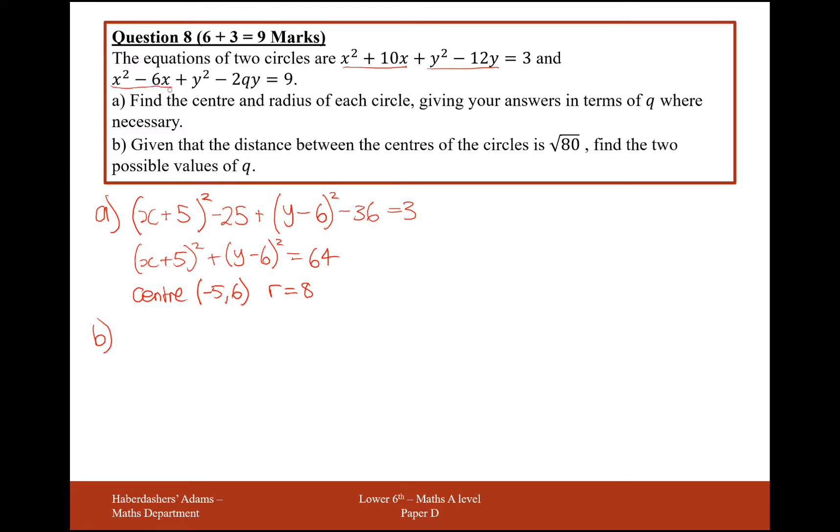This one here, so it's going to be x minus 3 squared plus y minus q squared, and then we need to take away the 3 squared, which is 9, and take away q squared as well, which will equal 9.